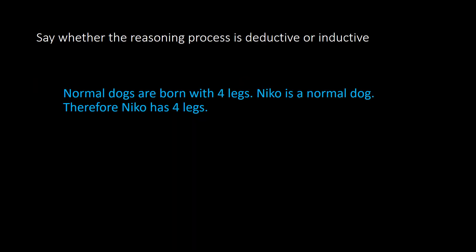With deductive reasoning, here we see that normal dogs are born with four legs. Nico is a normal dog, therefore Nico has four legs. This would be deductive reasoning because we are working with facts, working with natural laws where dogs are born with four legs. We're basing it off of information that we know is true.